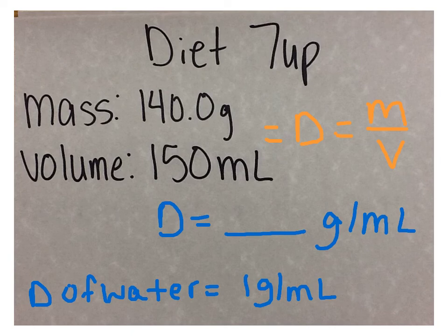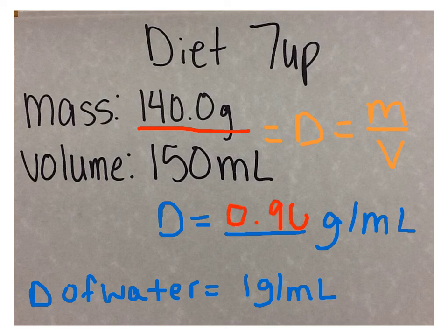The mass of the Diet Seven Up is 140 grams. The volume of the Diet Seven Up is 150 milliliters. When I take 140 grams divided by 150 milliliters, I get 0.96 grams per milliliter.